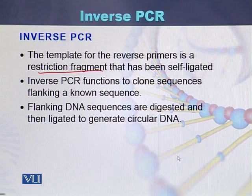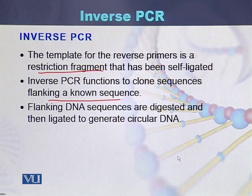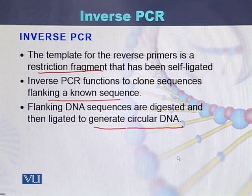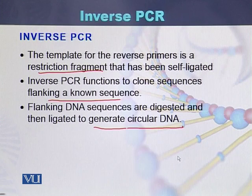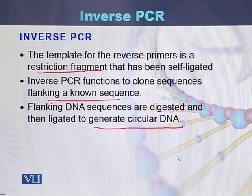Inverse PCR functions to clone sequences flanking a known sequence. The flanking DNA sequences are digested and then ligated to generate a circular DNA. The reverse primers are derived from restriction fragments which are self-ligated.